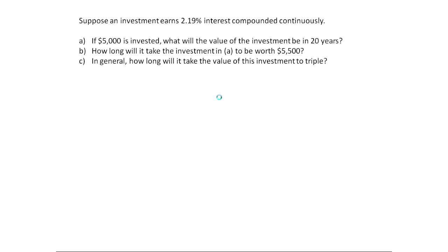So notice the questions that I ask. Let's say $5,000 is placed into this. What's the value in 20 years? That's really a calculator problem. How long will it take it to be worth $5,500? There we need a little bit of algebra, and then it'll be a calculator problem. And then part C is just saying in general, forget the $5,000. How long will it take for this investment to triple? With such a low interest rate, I'm guessing a while, but we'll figure it out.